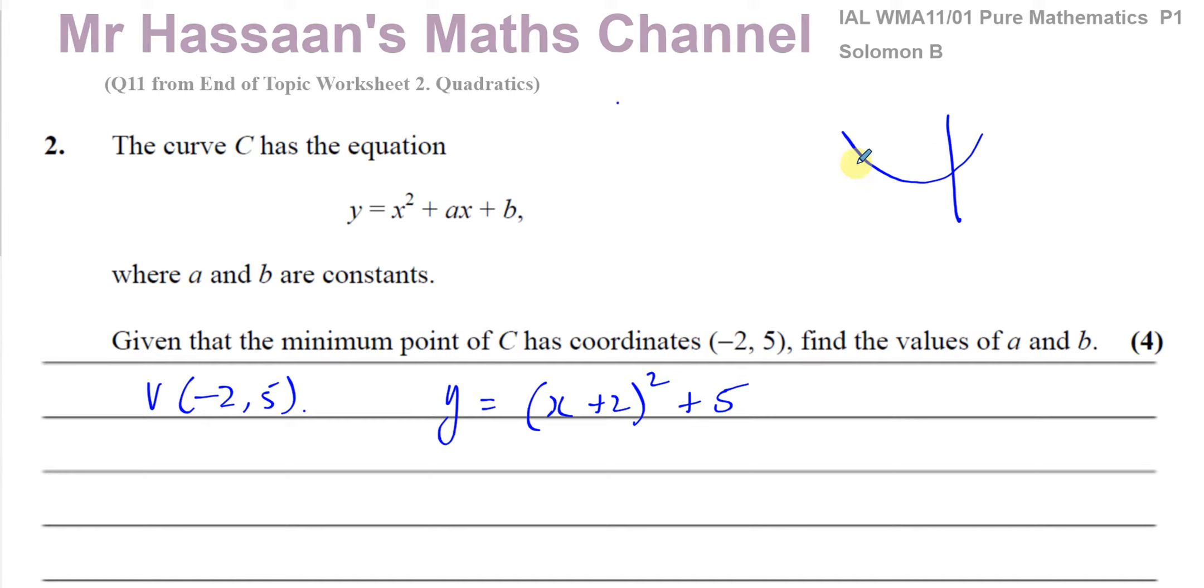So minus 2, 5 will be the lowest point that it reaches. Something like this. Minus 2 and 5. So that's your minus 2 and that's your 5. That will be the vertex. It will never be able to go below there because it tells us it's the minimum point.